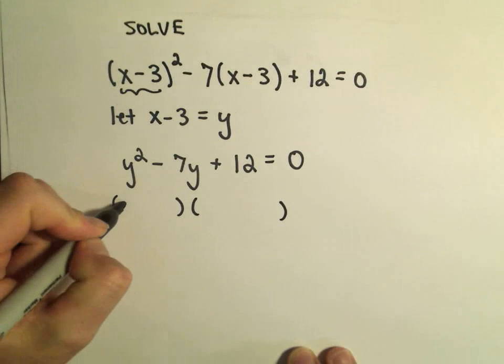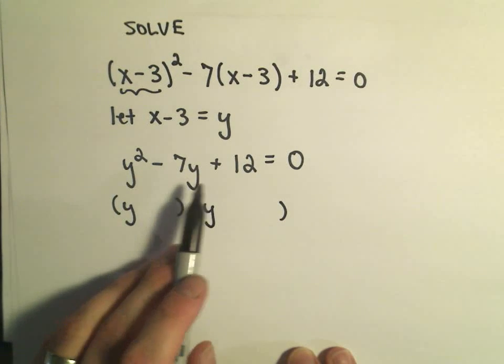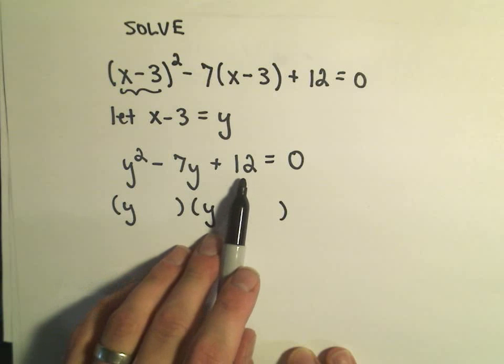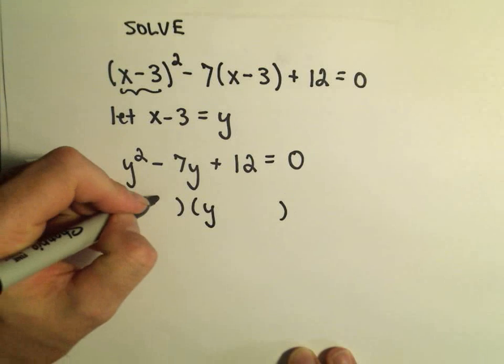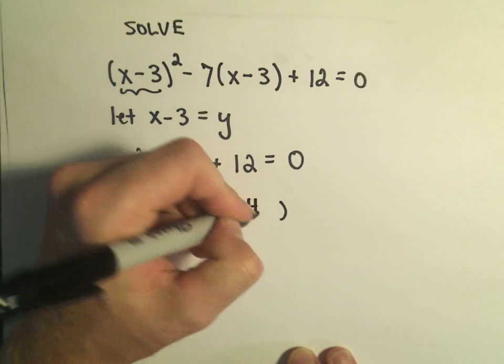So to get y squared we would need y and y. And then we simply need two numbers that multiply to positive 12 but add up to negative 7. I think we could use negative 3 and negative 4 for that.